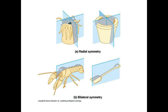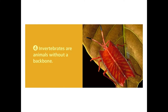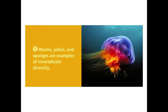Bilaterally symmetrical organisms, on the other hand, have right and left sides that are mirror images. There are also animals that lack any symmetry, and this is the case for most sponges. But before we look at the defining characteristics of specific phyla, it's important to define what it means to be an invertebrate. An invertebrate is simply an animal that lacks a backbone or spinal column. Invertebrates are the largest group of animals — in fact, approximately 95% of all animals are invertebrates.